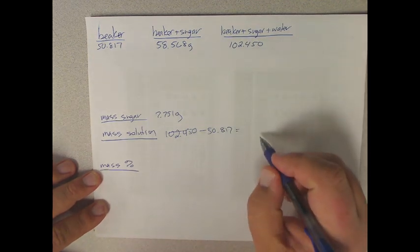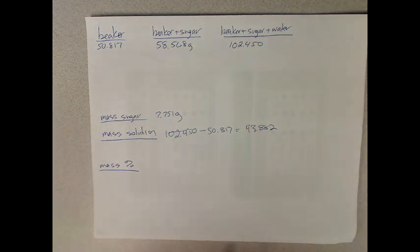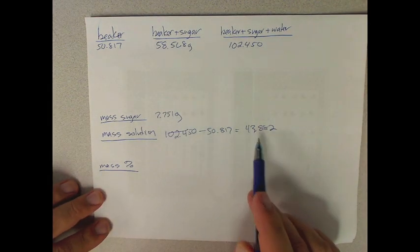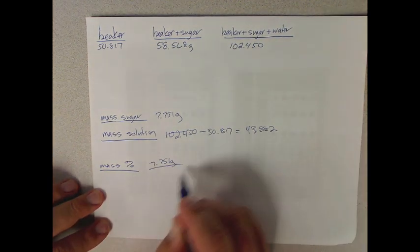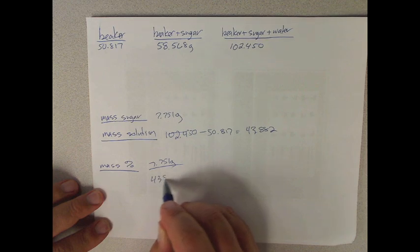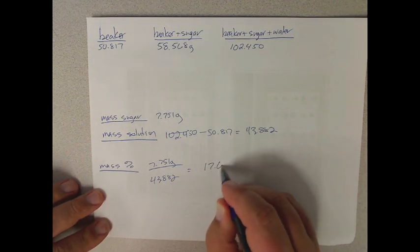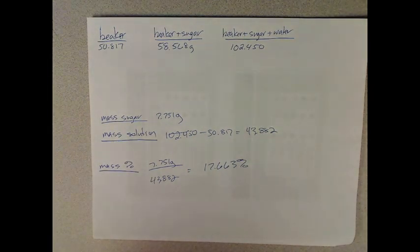That's going to be 43.882. So if you want to do mass percent, you just need to take the mass of sugar divided by the mass solution times 100 percent. So 43.82, your number then is 17.663 percent. That gets us the mass percentage.